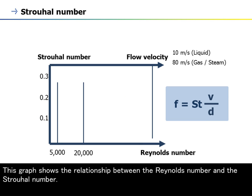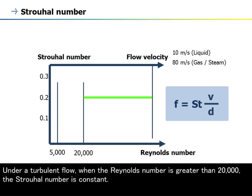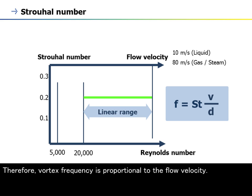This graph shows the relationship between the Reynolds number and the Strouhal number. Under a turbulent flow, when the Reynolds number is greater than 20,000, the Strouhal number is constant. Therefore, vortex frequency is proportional to the flow velocity.